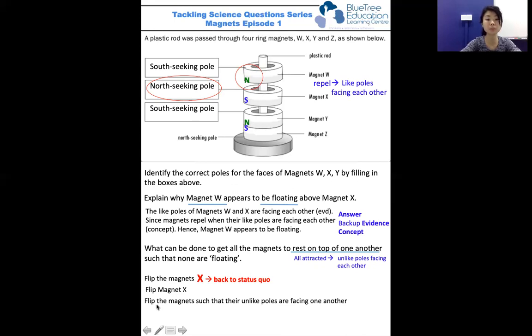Alternatively, you can be specific and say flip the magnets such that the unlike poles are facing one another. So do take note when you see a question like this in the future.